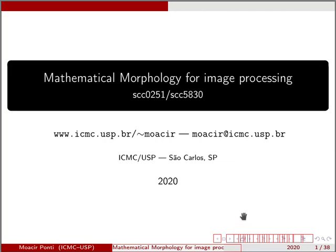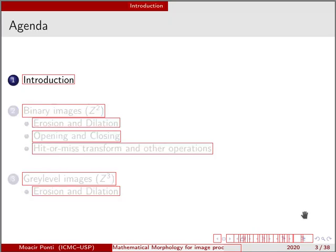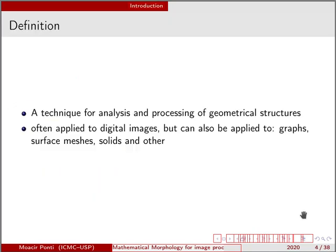Mathematical morphology is a tool for image processing. It does not serve a single purpose, but instead can be used in many steps of image processing: enhancement and also analysis. This technique allows for analysis and processing of geometrical structures in general. Although we are going to see it applied to digital images in this course, it can also be applied to other data such as graphs, surface meshes, solids, and others.